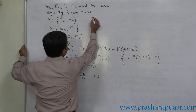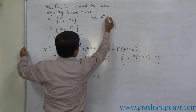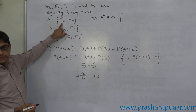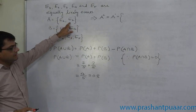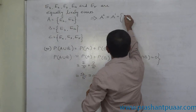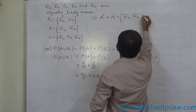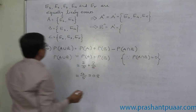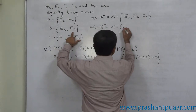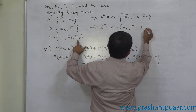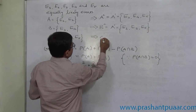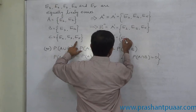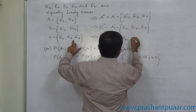This is A. Now we are interested in the complement of A. What is A complement? Out of E1, E2, E3, E4, E5, only E1 and E2 are there in A. So A complement is E3, E4, and E5. Same way, B complement: B contains E3 and E4, so B complement is E1, E2, and E5. And similarly, C complement: C contains E2, E3, E5, so C complement is made up of E1 and E4.